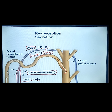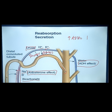The amount of urine produced also depends on how much antidiuretic hormone is produced by your pituitary gland. High ADH equals decreased urine output, while low ADH means increased urine output.